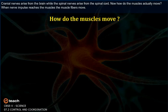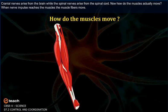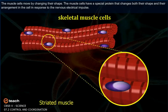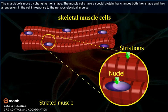When the nerve impulse reaches the muscles, the muscle fibers must move. The muscle cells move by changing their shape. Muscle cells have a special protein that changes both its shape and arrangement in the cell in response to the nervous electrical impulse.